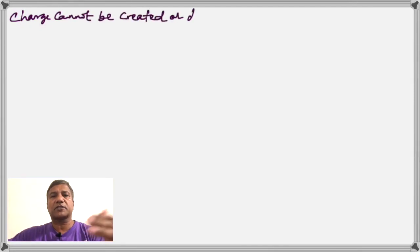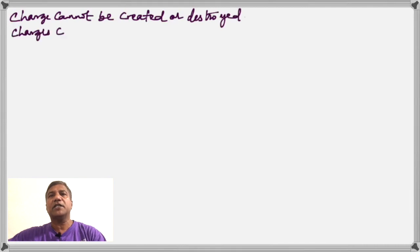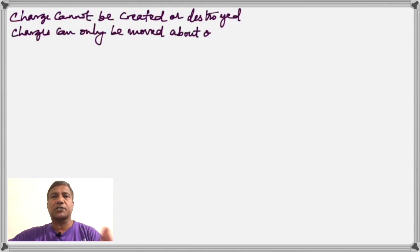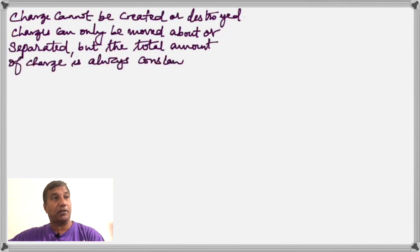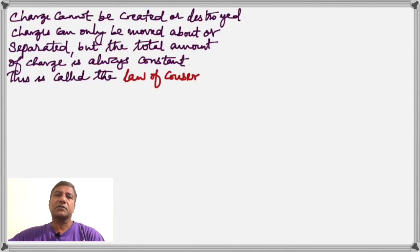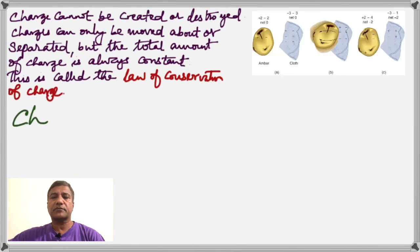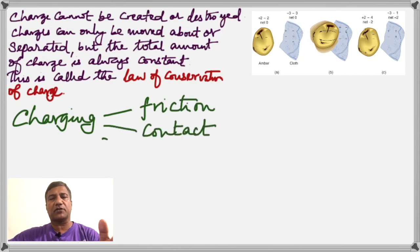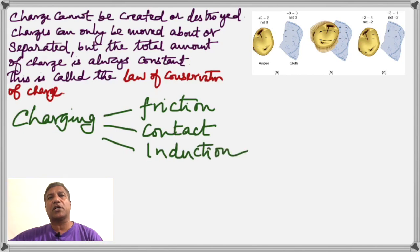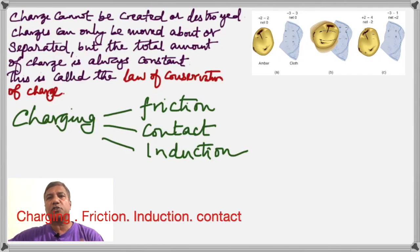The conservation of charge states that charges cannot be created or destroyed — they can only be moved from one object to another. If you remove electrons, a material becomes positively charged; if you add electrons, it becomes negatively charged. An object can be charged in three ways: number one, by friction; number two, by contact with a charged object; and number three, by induction.